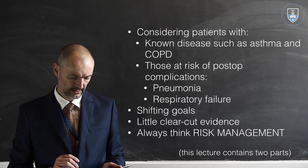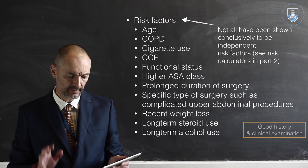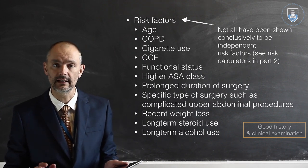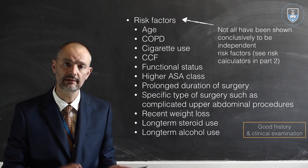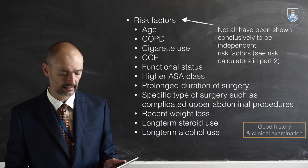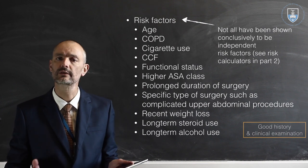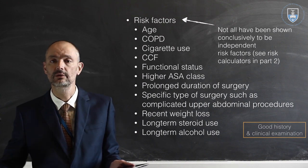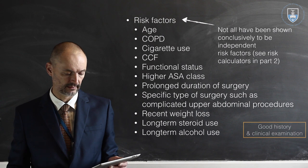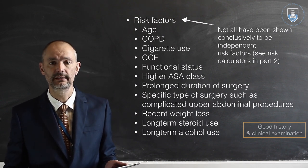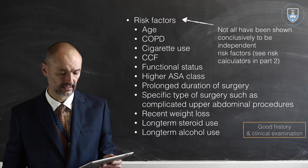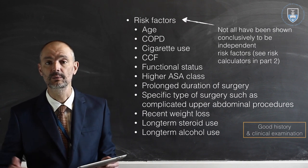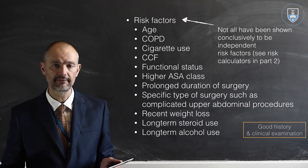Here's a long list of risk factors. Not all have been shown conclusively to be independent risk factors, but some have been built into online calculators — which are actually very useful for both pneumonia and respiratory failure, and we'll talk about them in part two. Risk factors include: age — the older the patient, the higher the incidence of underlying lung problems and the worse they'll do with prolonged anesthesia; pre-existing COPD; cigarette use; and CCF.